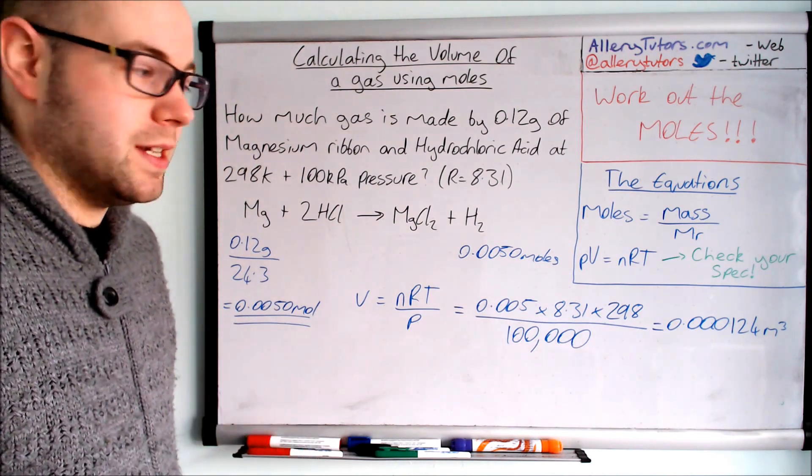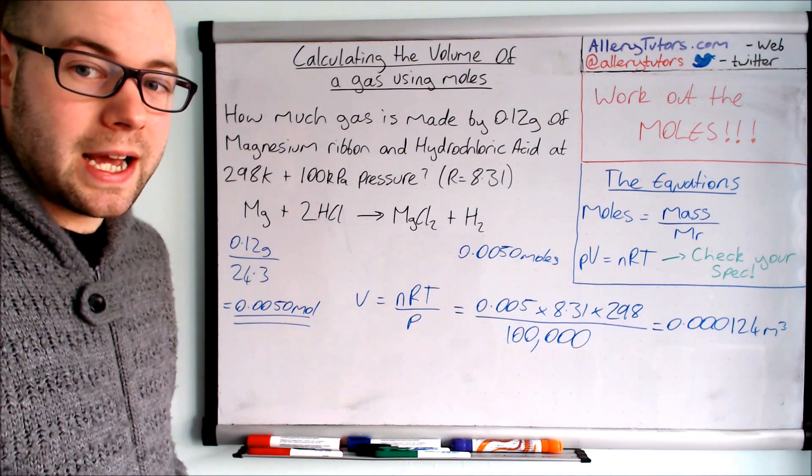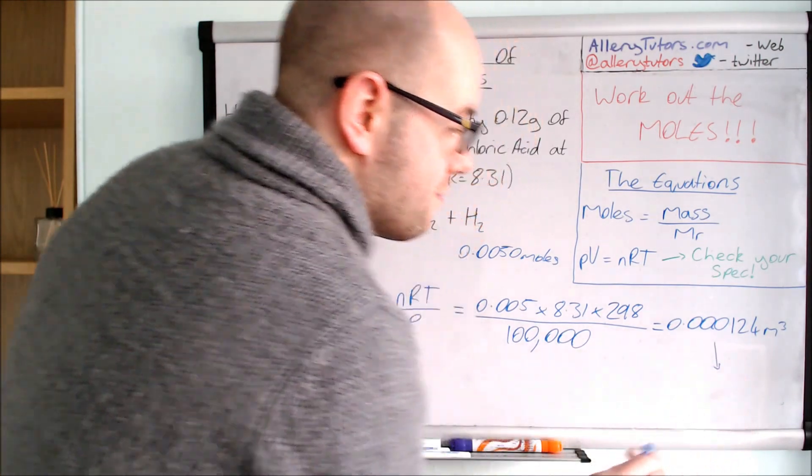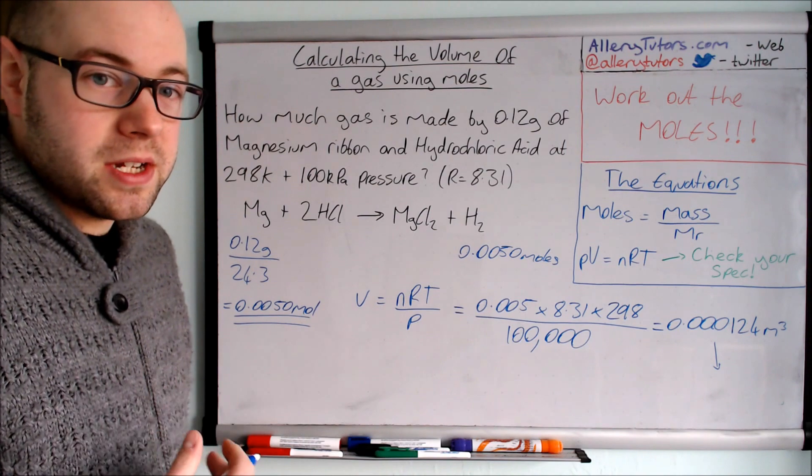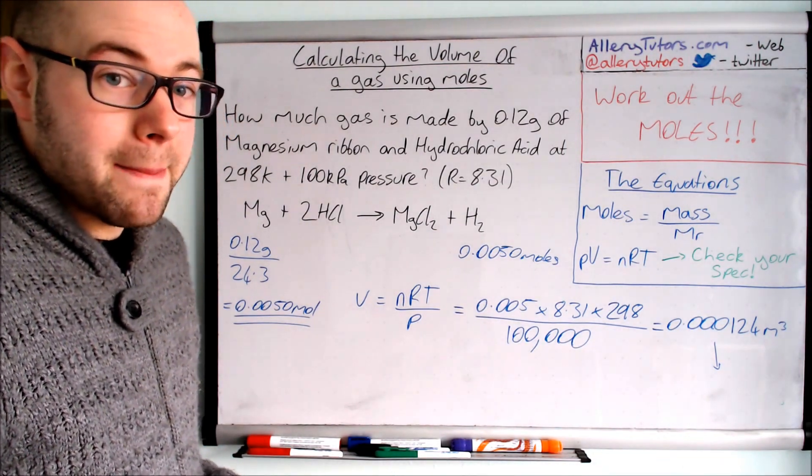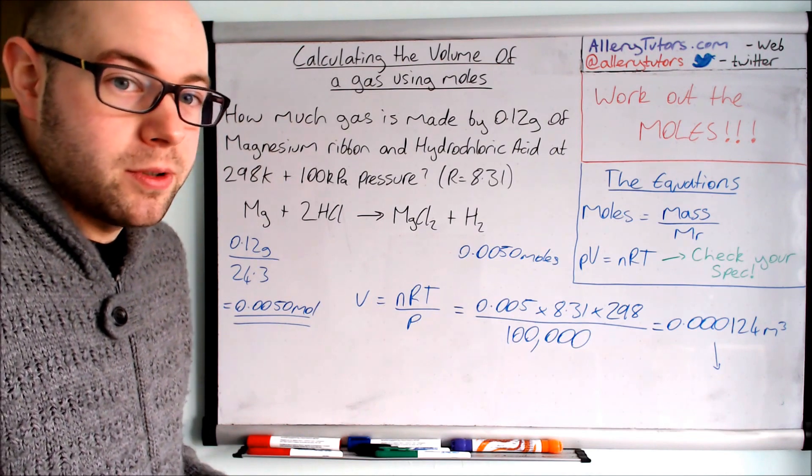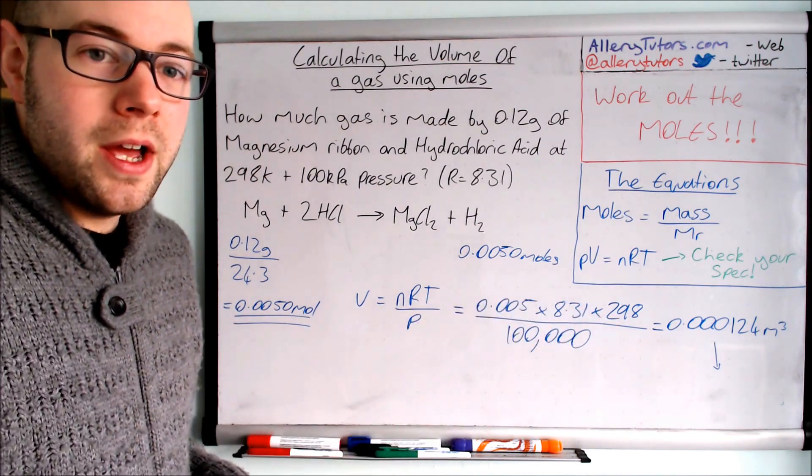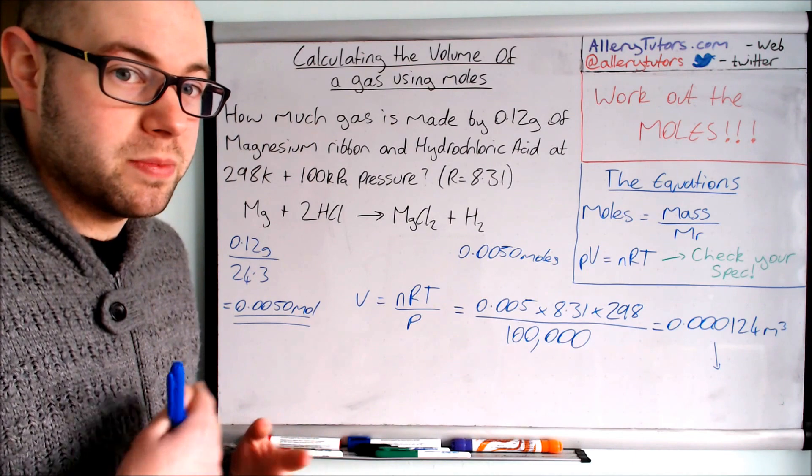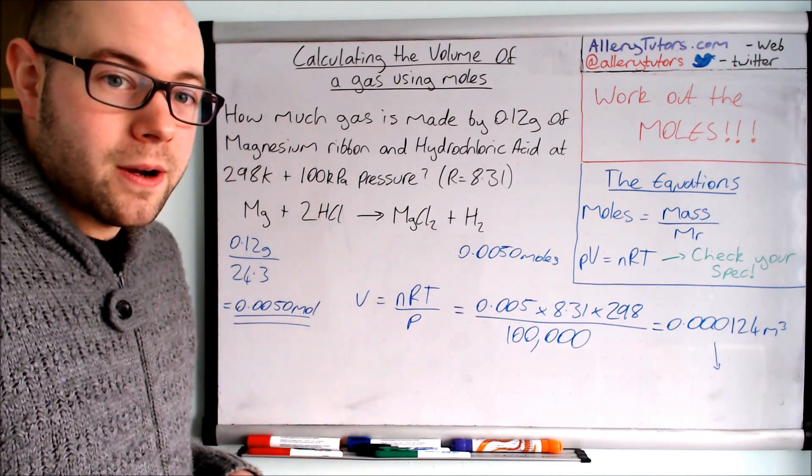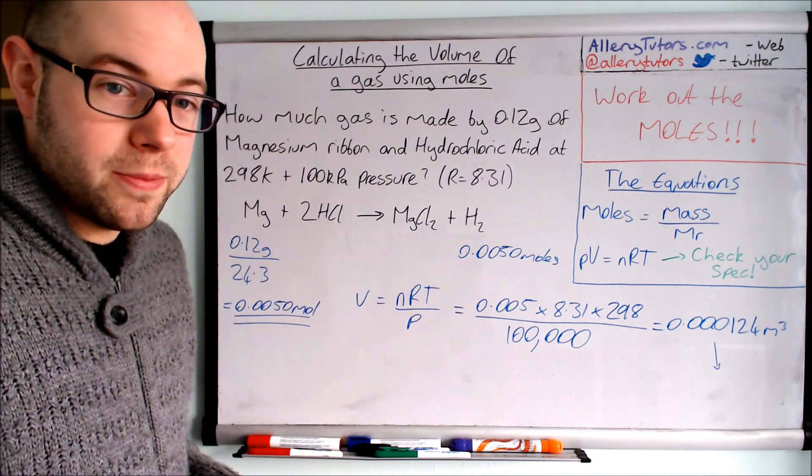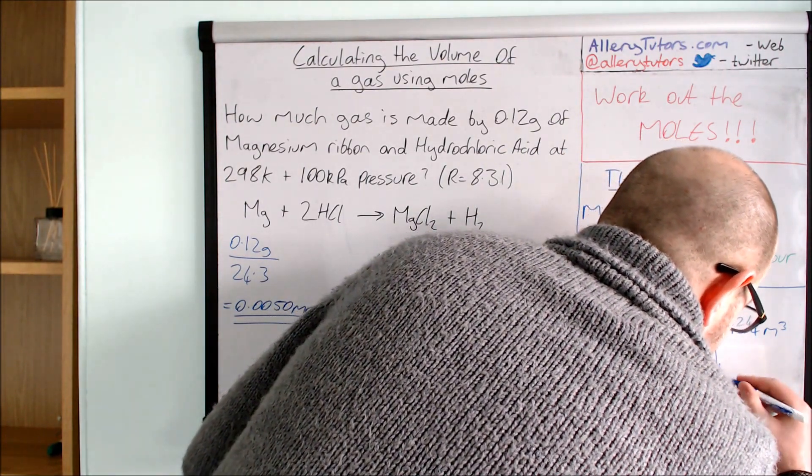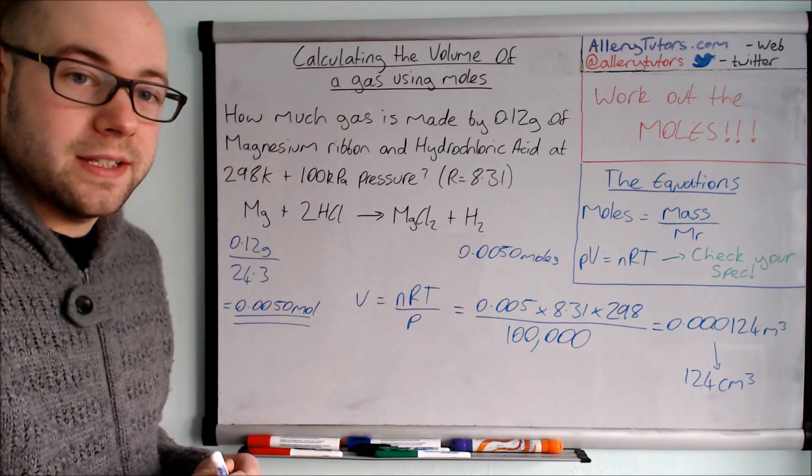However it's normally best to perhaps write it into centimetres cubed if they ask in particular. In this case they haven't but I'm going to show you how to do it anyway. Now you need to be able to convert these things quite readily. Converting from metres cubed to centimetres cubed is actually multiplying by a million. Now if you're not sure why we multiply by a million in this case then I have done a video on how you calculate and how you can convert between units. So if you just click on the link below you can have a look at that video there because it is really important being able to convert between units correctly. So if I take that number there, convert times it by a million we should get the volume in centimetres cubed. Now you don't need a calculator for this one but it's 124 centimetres cubed of gas that is produced.